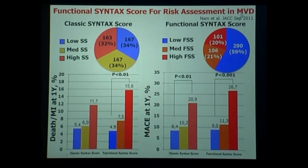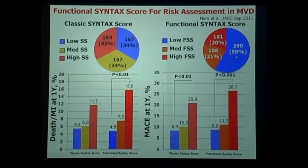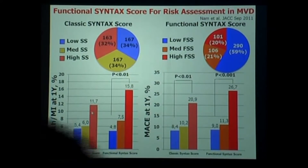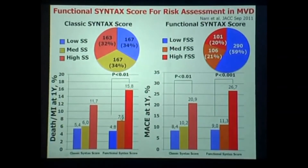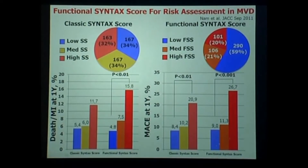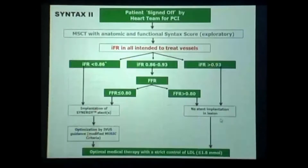But if you use FFR, then there is no longer a tercile. You see that you increase the group of low functional Syntax score — growing up to 59 percent. The two other groups get smaller. And you get very good discrimination for death and MI at one year, and also very good discrimination for MACE at one year.